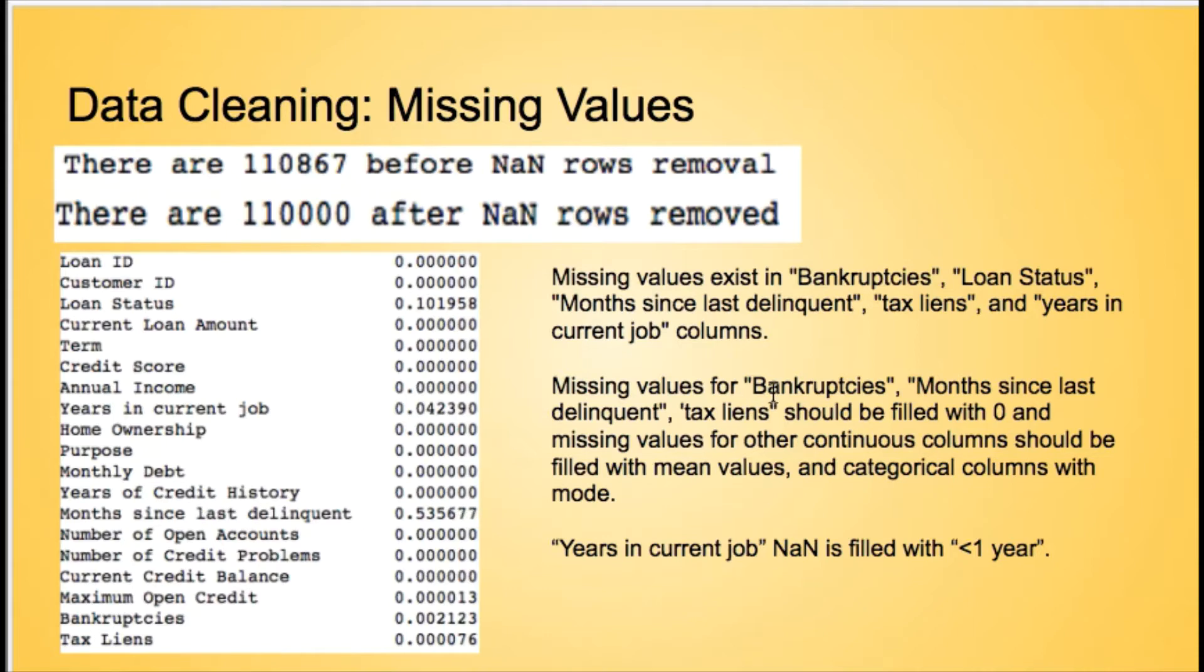For example, we replaced bankruptcies, months since delinquent, and tax liens with zero values because it's more aligned with the business situation, which means the person has no bad credit behavior. And for one categorical column, years in current job, we just filled the null value with less than one year.